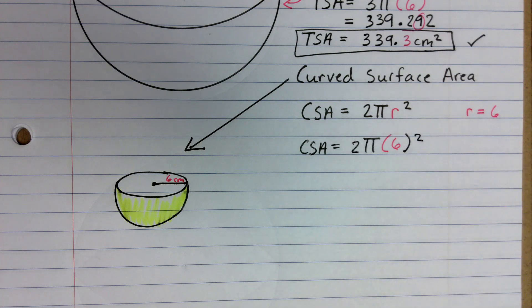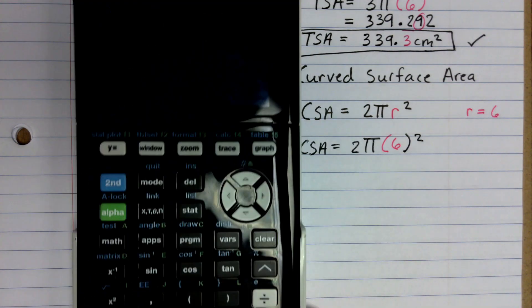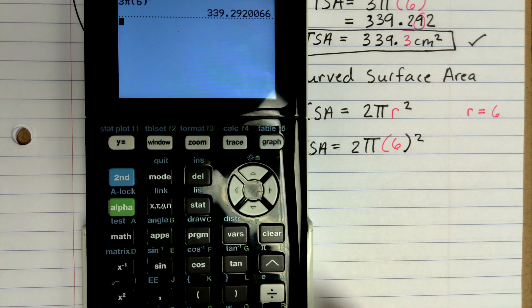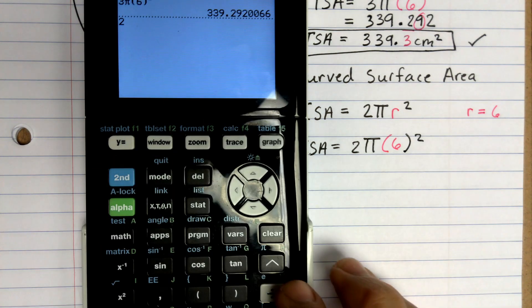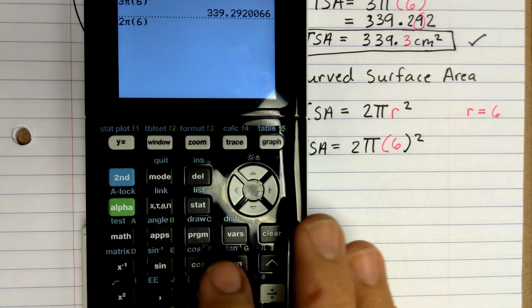So notice it's the same problem. The radius is still 6. The only difference in the formula is we just have a 2 instead of a 3. And so I'm going to go ahead and put that in, 2 times π, and in parenthesis, 6, and I'm going to square it.